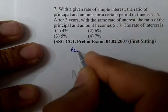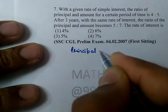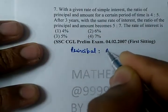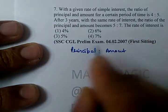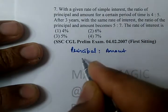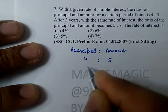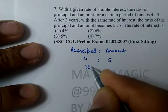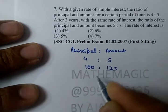Look, principal to amount — how much is it for the first time? 4:5. What does 4:5 mean? It means 100:125.